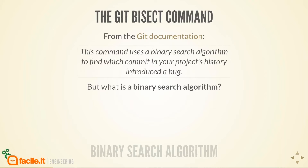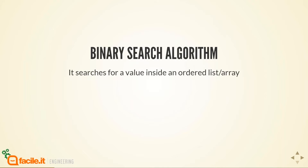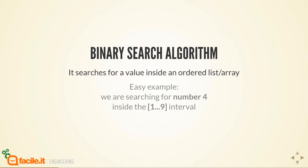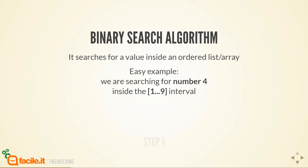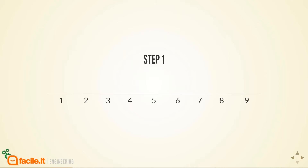Basically, it's a search algorithm that can be used on an ordered list or array — emphasis on ordered. To show how it works, I'll use an easy example: searching for the number 4 inside an interval of numbers between 1 and 9. We start with our interval and place boundaries — a left boundary over the number 1 and a right boundary over the number 9. In each iteration of this algorithm, we place a cursor in the middle of our search area, in this case over the number 5.